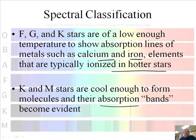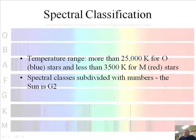And then the K and M stars are cool enough to form molecules, and the absorption bands become evident. So if you looked at the chart, you'd kind of make sense. Now, for K and O stars, the temperature range is more than 25,000 Kelvin for O, that's blue stars, and less than 3,500 for M stars.